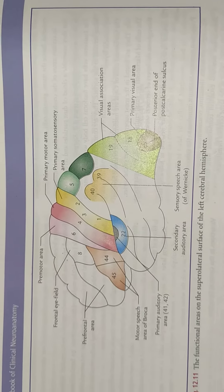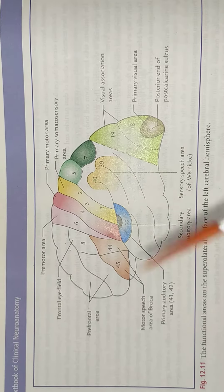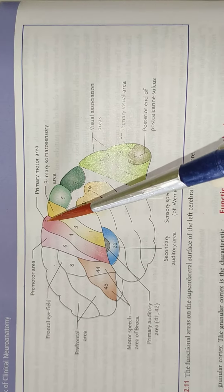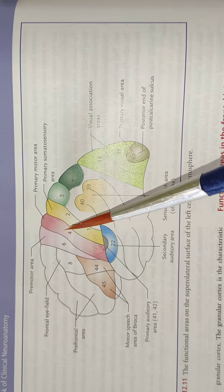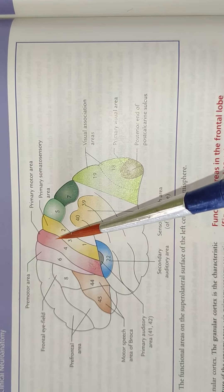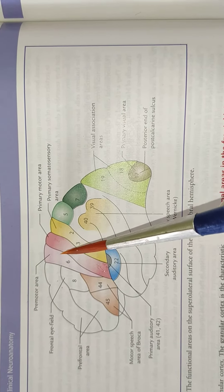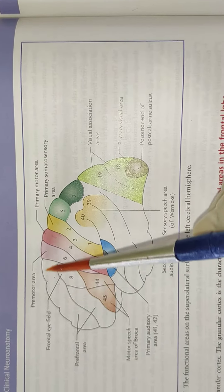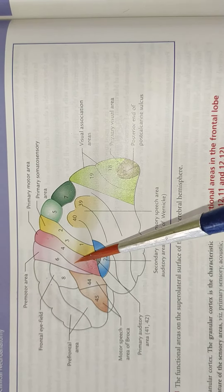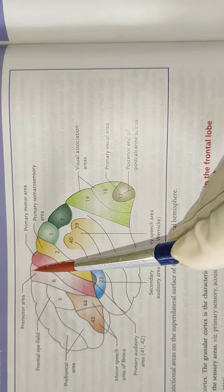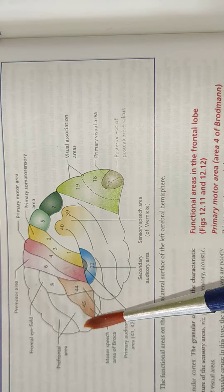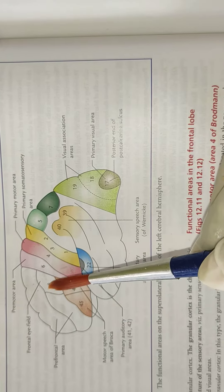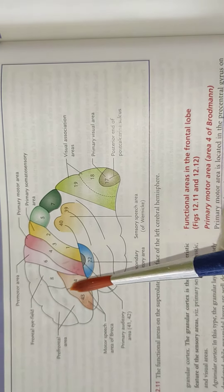Now we will see this area in the book. This is the primary motor area, area number 4, that is in the pre-central gyrus. In front of that, in the posterior part of the superior, middle, and inferior frontal gyrus, there is the pre-motor area. In the posterior part of the middle frontal gyrus, area number 8, that is the frontal eye field.